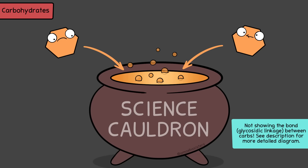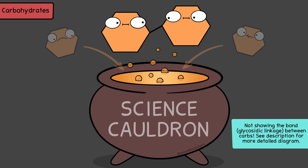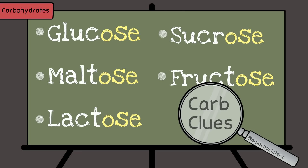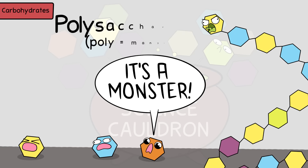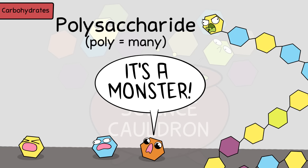For example, put two glucose sugars together and you get the disaccharide maltose. By the way, a lot of sugars have that -ose ending—glucose, maltose, lactose, sucrose, fructose. The ending -ose can be a carbohydrate clue. If you join a lot of monosaccharides together, they can combine to make a polysaccharide—a big carbohydrate.